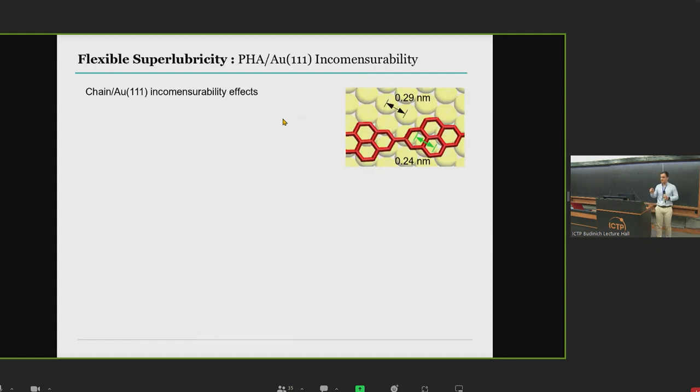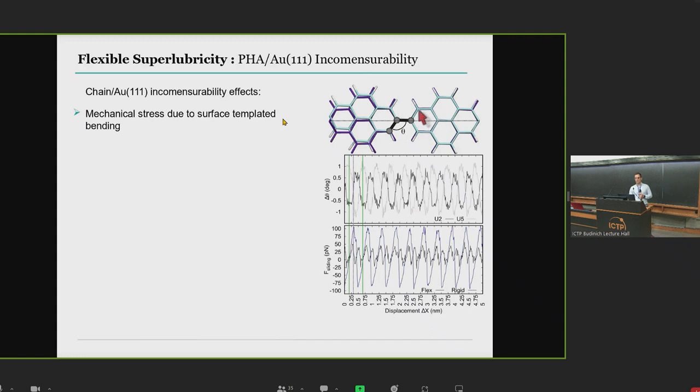However, they emanate from the very same source, and that is the incommensurability between the chain and the gold. The distance between hollow sites of graphene are 0.24 nanometers compared to 0.29 in gold. What this makes is this induces a bending in the chain. You can see here this bending angle between consecutive units in black as we slide the molecule. You can see how it oscillates. In gray we show this bending angle for another unit further down the chain. You can see that as you enter into the onset of the slip event here, indicated by this dashed line, this angle drops to zero in both cases. So the chain is bent and then when it begins to slip, it straightens, and then it recovers a new bent configuration.